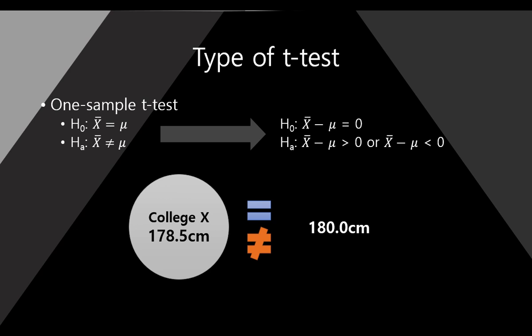And second, one-sample T-Test. In here, we just have one sample. For example, College X's mean height of a male student. And we just want to know if this college student's average height is the same as 180 or not.